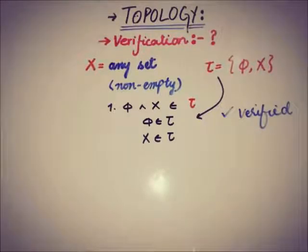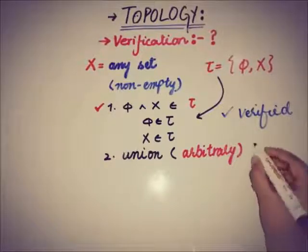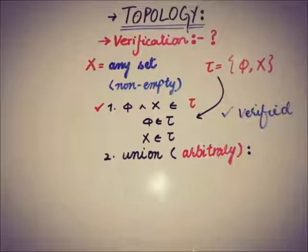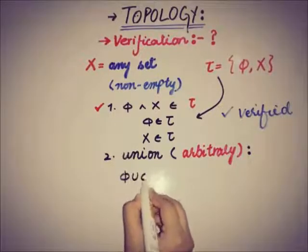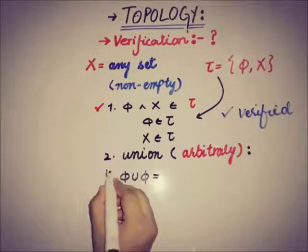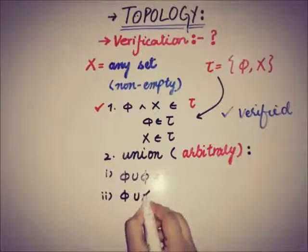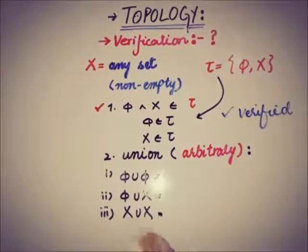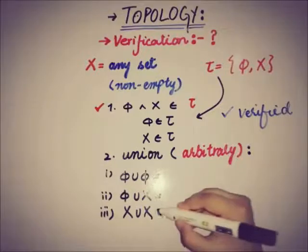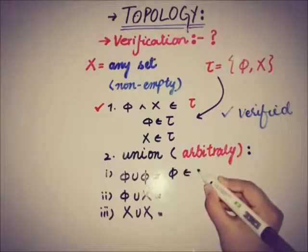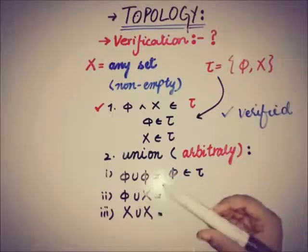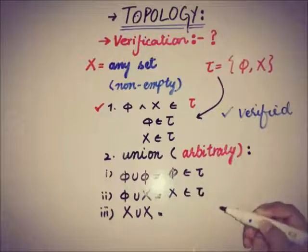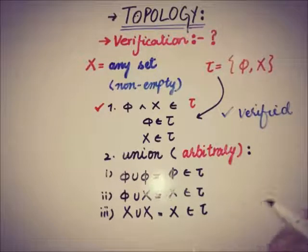Now the second property is about arbitrary unions of members of the collection of subsets of X. There are only three possible unions: phi union phi equals phi, and that belongs to tau; phi union X equals X, and that also belongs to tau; and X union X equals X, which also belongs to tau. So the arbitrary unions of members of this collection are also members of tau, and the second condition is verified.